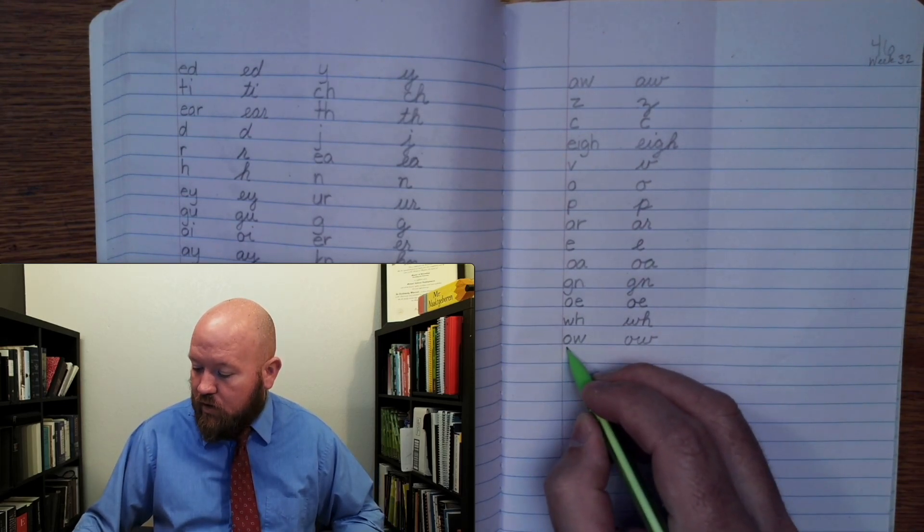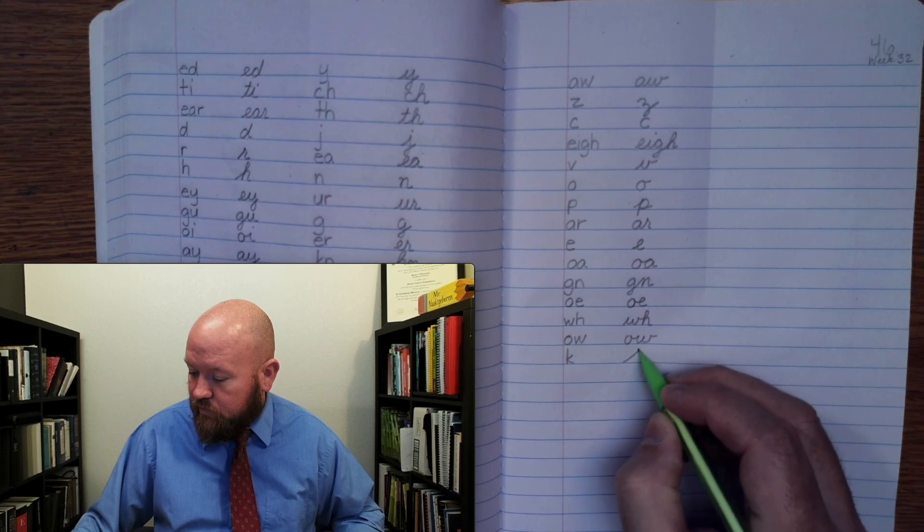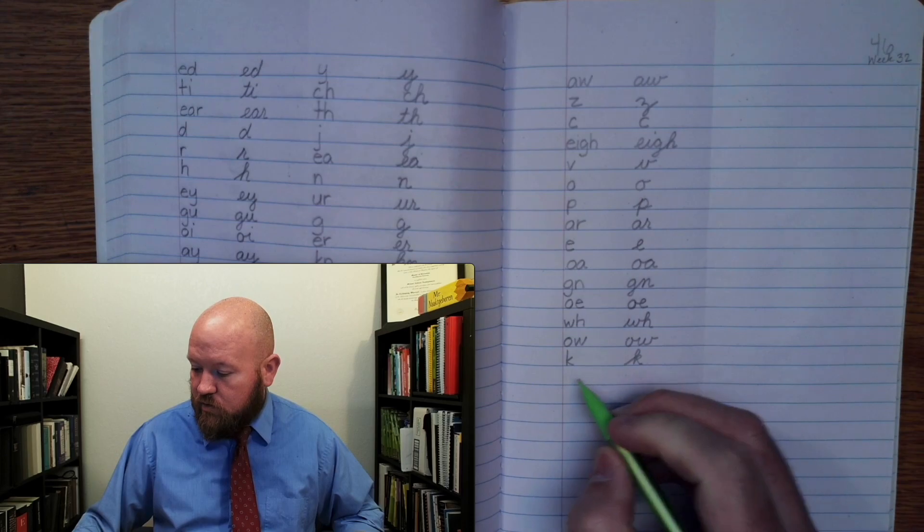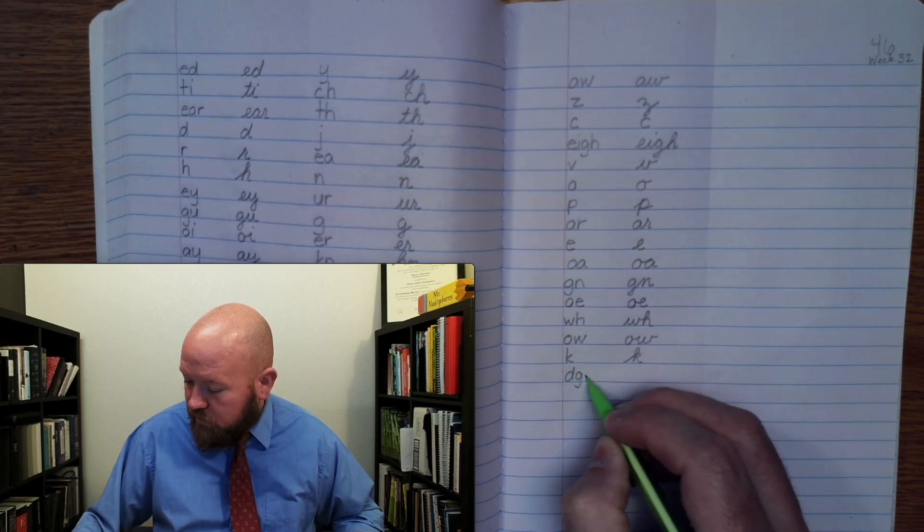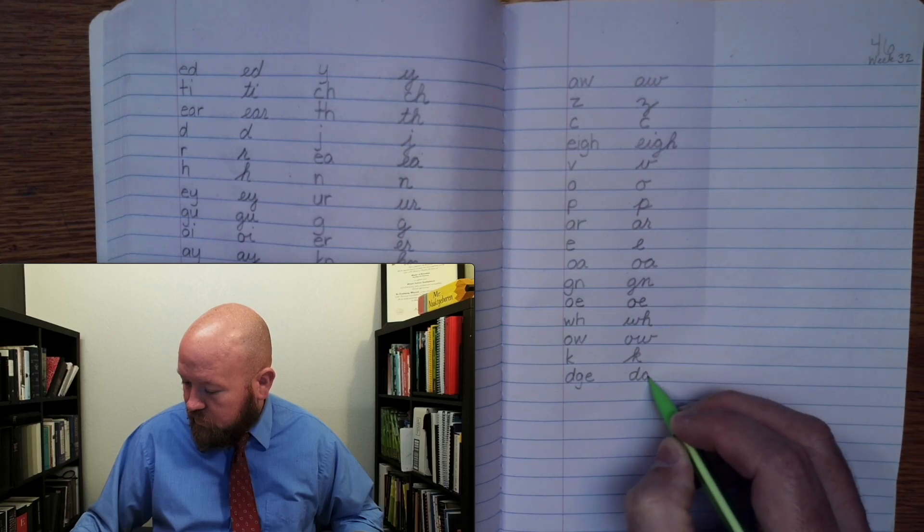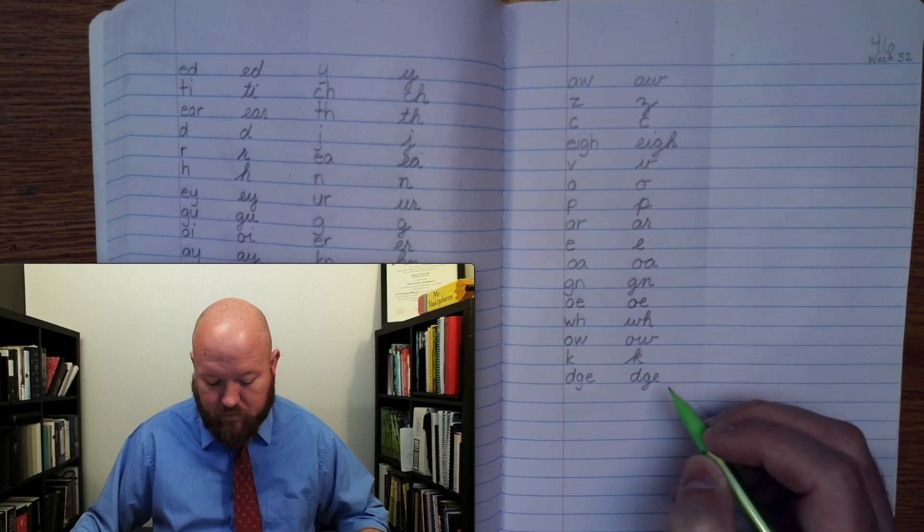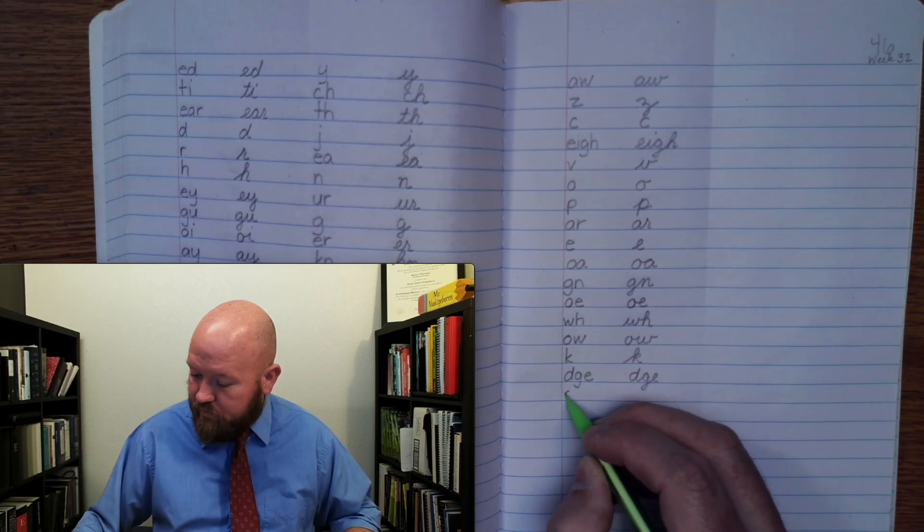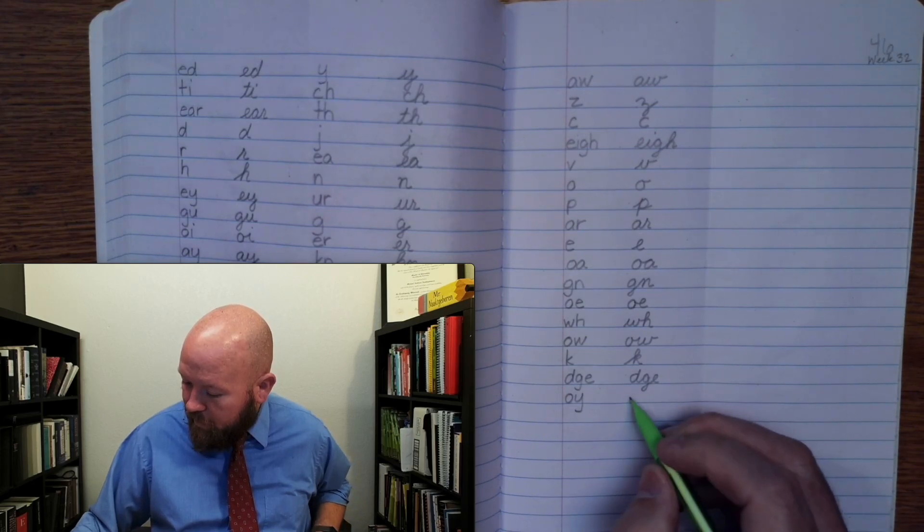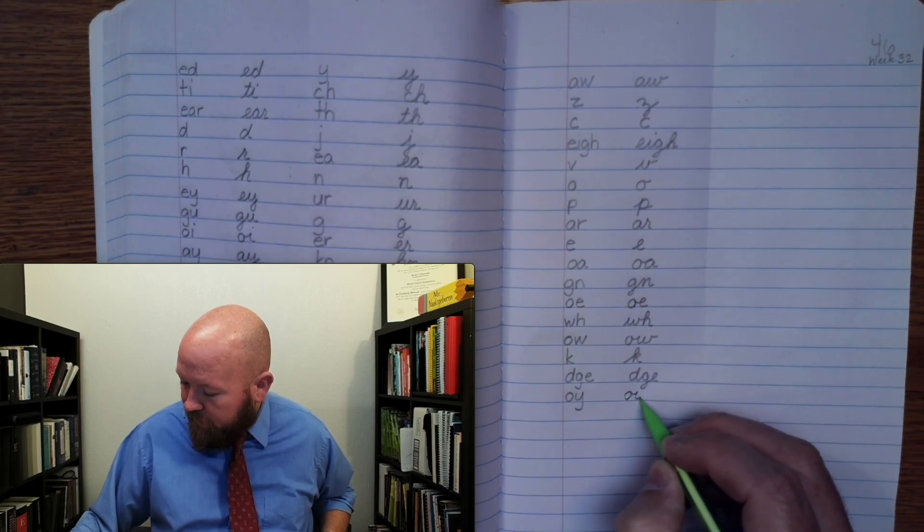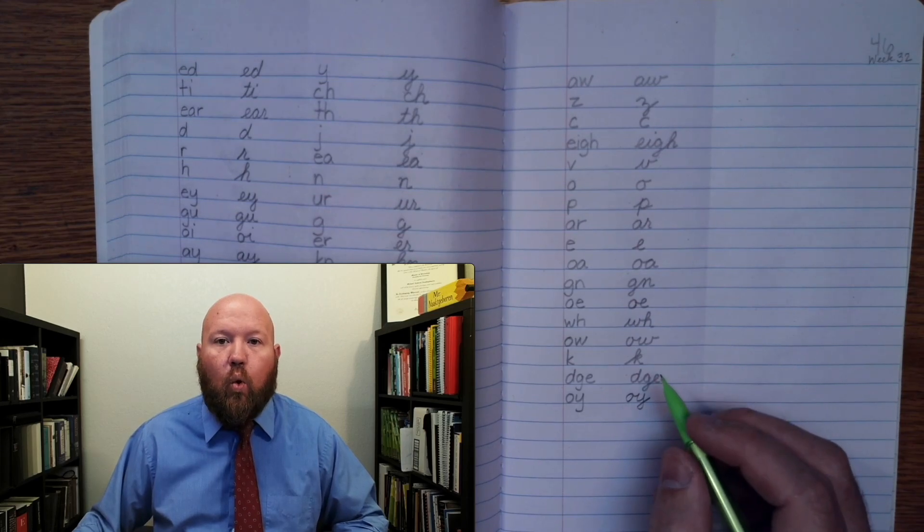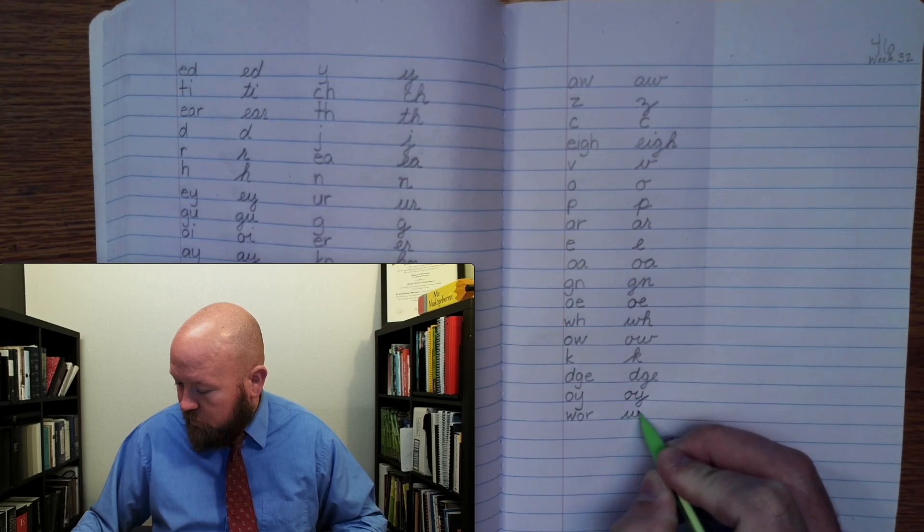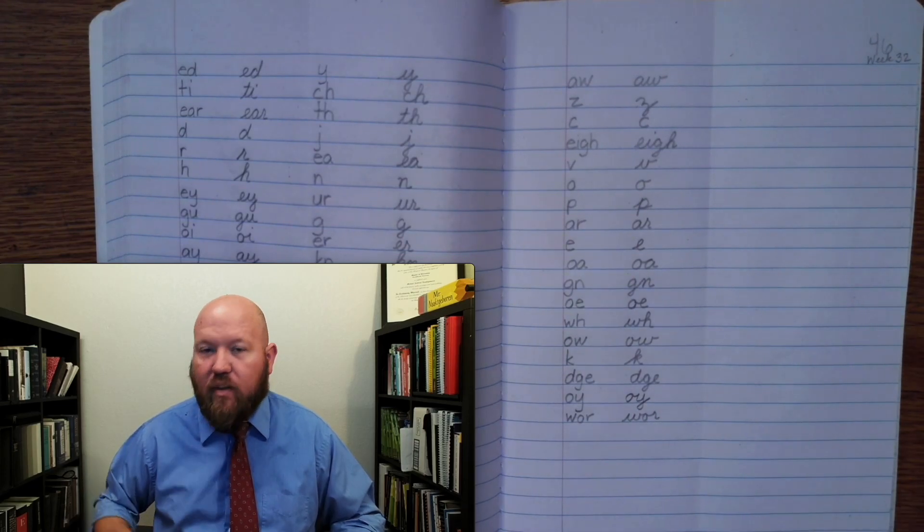Next one. K. K. Next one. J, three letters. J, three letters. J, J. Next one. Oy. Oy. Last one. Were. Were.